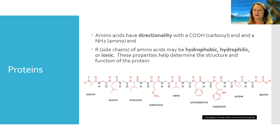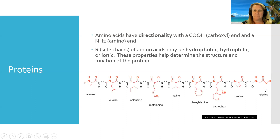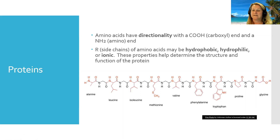Amino acids have what we call directionality. In a polypeptide chain, the first amino acid will always have its amino group at the start of the chain, and the carboxylic acid group at the end. Additional amino acids are added to the carboxylic acid end. The R groups or side chains are very different across amino acids — some are hydrophobic, some are hydrophilic, and some have plus or minus charges, which we call ionic. The properties of those R groups determine the identity of the amino acid and, more importantly, how the amino acids interact with each other and fold — and that folding determines the protein's structure and function.